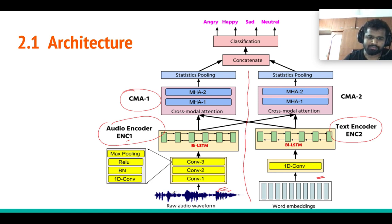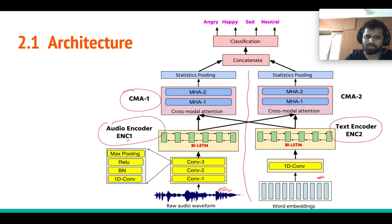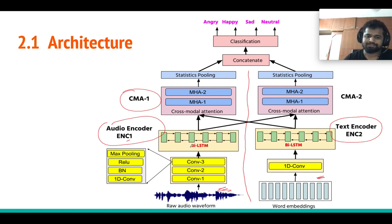Encoder 1, the audio encoder, takes raw audio waveform directly. We use a sequence of convolution layers to extract features directly from the raw audio. Since we are working with a 1D signal, we use 1D convolution. We have three different convolution blocks, each with the same settings but different parameters: 1D convolution, batch normalization, ReLU, and max pooling operations.